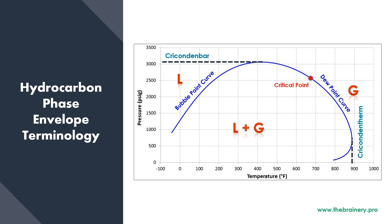It's also important to remember that if we stay above the Cricondenbar but to the left side of the critical point — shown here by a red vertical line passing through the critical point — we could still have liquid or extremely dense gas phase which almost behaves like liquid. Whereas if we are to the right side of the critical point and above the phase envelope, we can be 100% certain that we will always be in a gaseous phase. With this terminology and background of phase envelopes, let's move on to understanding how the rich gas and lean gas examples we discussed behave.